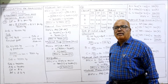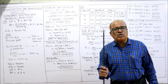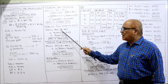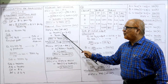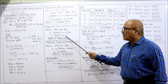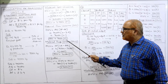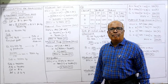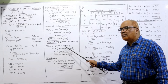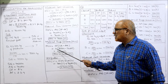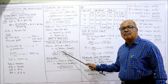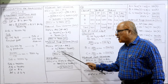Material price variance (MPV) formula: AQ × (SP − AP) = 70,000 × (4 − 3.9) = 70,000 × 0.1 = 7,000 favorable. Material usage variance (MUV) formula: SP × (SQ − AQ) = 4 × (75,000 − 70,000) = 4 × 5,000 = 20,000 favorable.